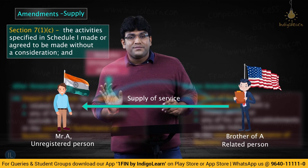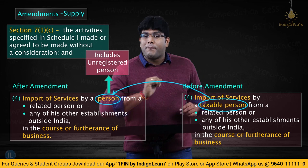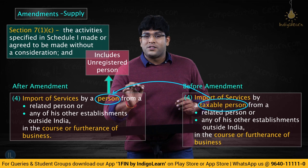So finally, what is covered in section 7.1c read with Schedule 1 is import of services by a person from a related person or any of his establishment outside India in the course or furtherance of business. That shall be covered in the concept of supply within the meaning of section 7.1c read with Schedule 1.